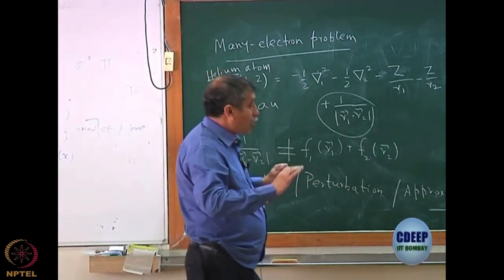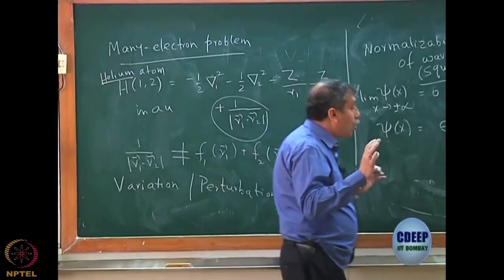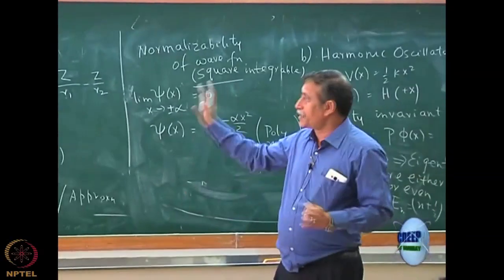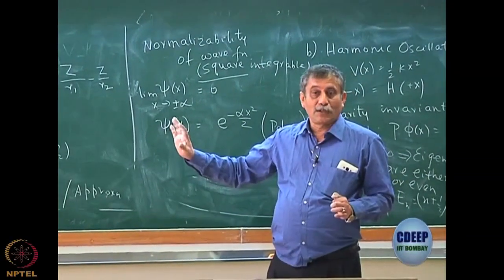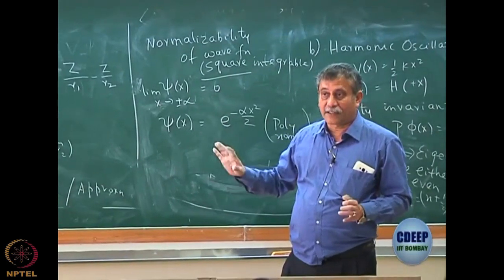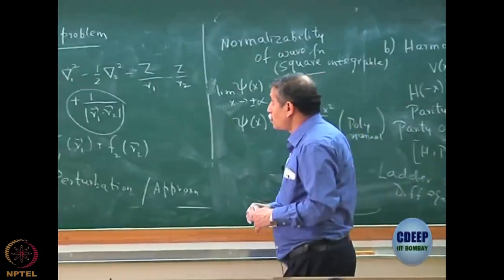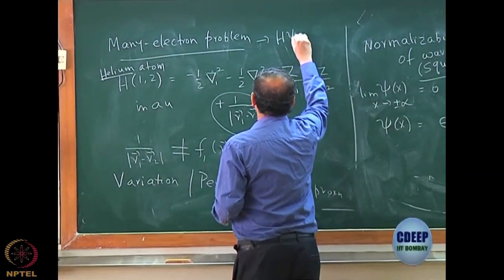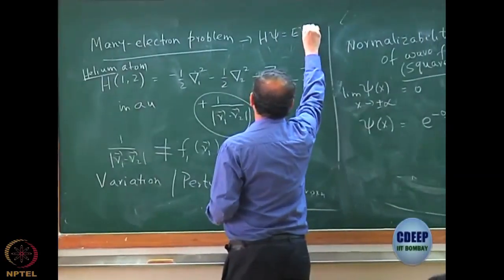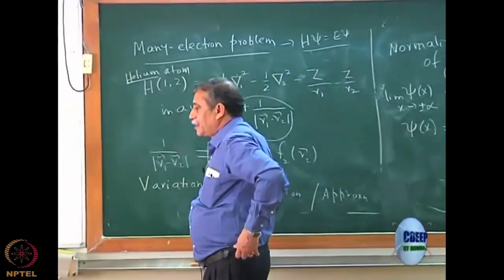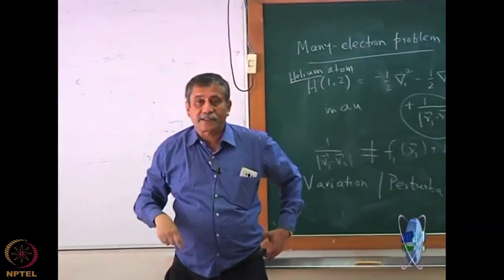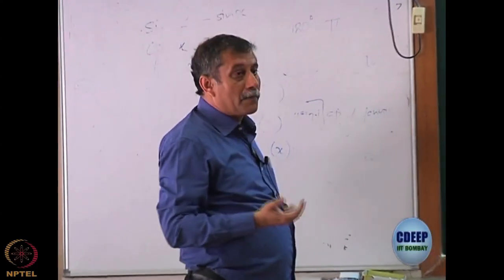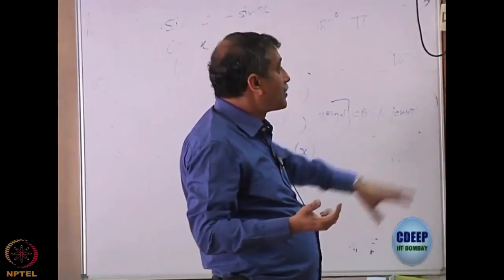Although I told you, we are interested in solving only the stationary states of the Hamiltonian, even that solution is not possible. What we will be discussing further in this course is how to solve for many-electron problem H psi equal to E psi, and this has been the quantum chemistry for 70 to 80 years. How do you solve H psi equal to E psi for many-particle problem where Hamiltonian is non-separable?